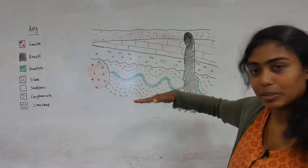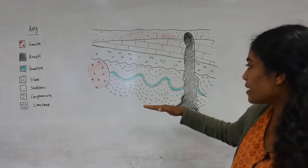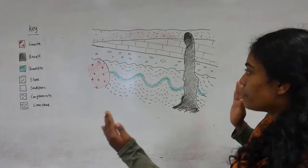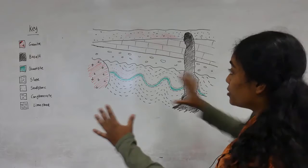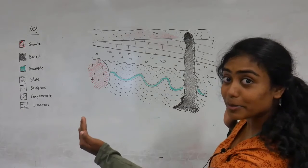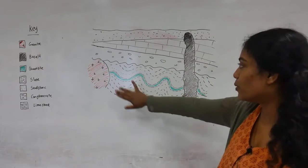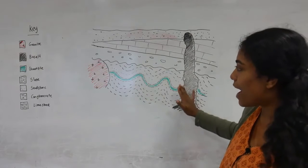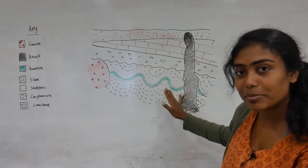That would have originally been deposited horizontally, and then those units would have been subjected to some compression which would have caused this folding and the metamorphism of these rocks.